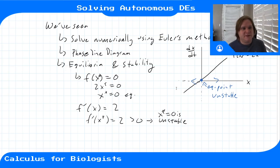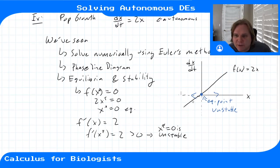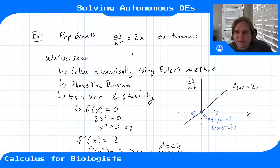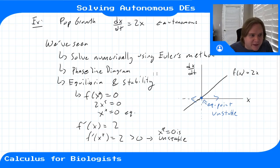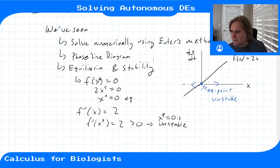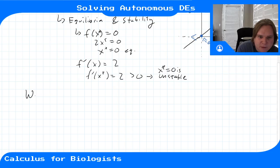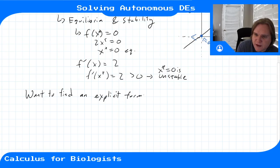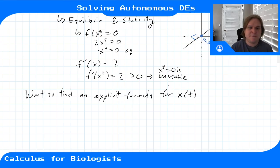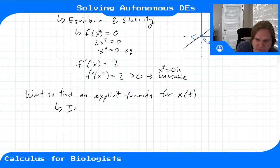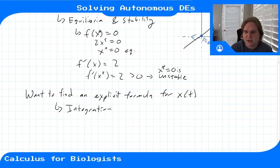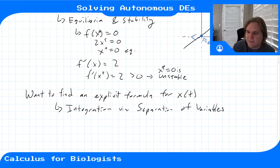We've seen lots of ways to understand what happens in this system — starting anywhere besides zero, it's unstable and will grow off to infinity. But it would be nice to get an explicit formula for x as a function of time, so we could ask questions like what's the doubling time, as we did with discrete time systems. We want to find an explicit formula for x as a function of time, and we'll do that using integration with the technique called separation of variables — a fancy name, but really just integration.